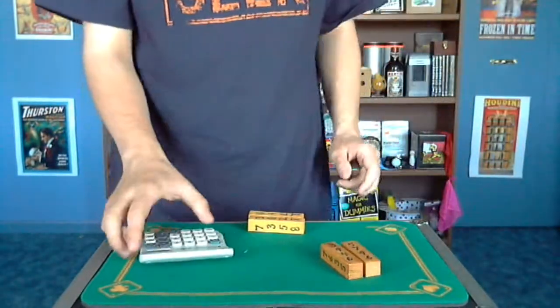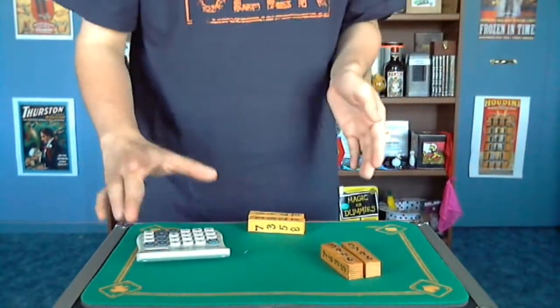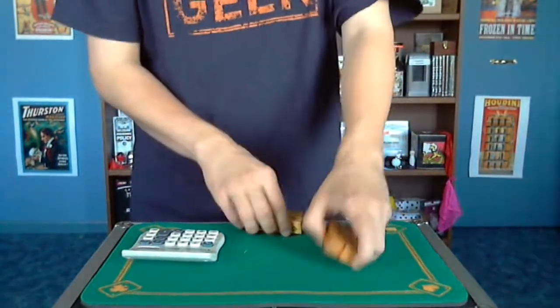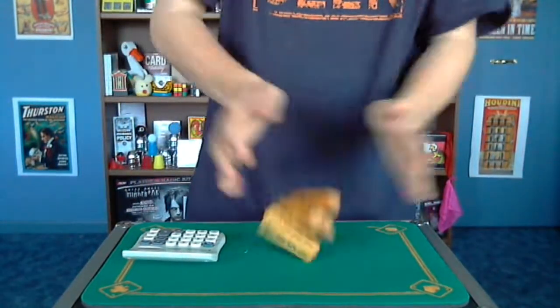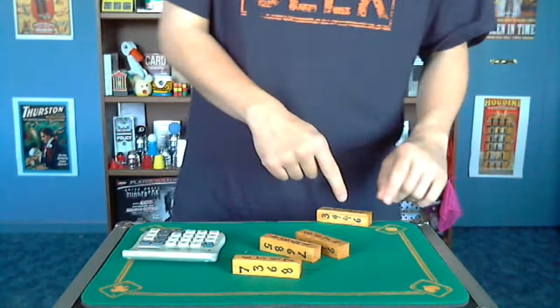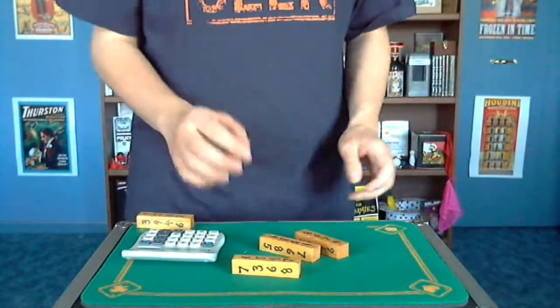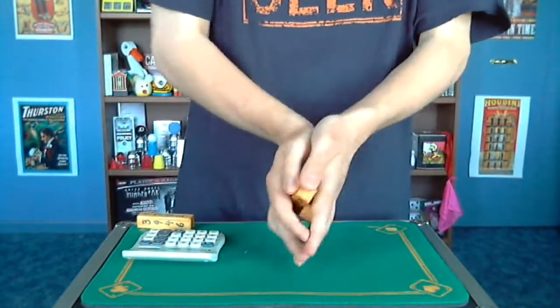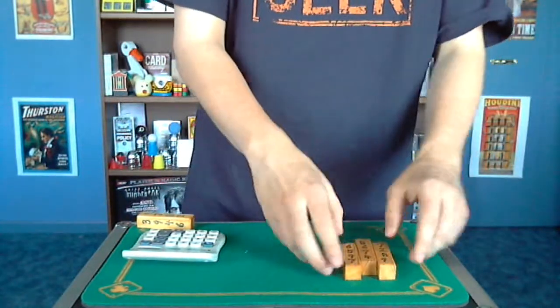Now, you're probably saying to yourself, anybody can do a two digit number. Can you do a three digit number? Of course I can. So we'll give the dice a roll. This one's already jetting out over here. So we're going to get rid of that, and we'll use these.